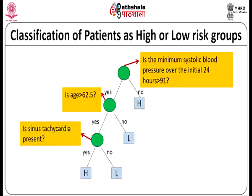Starting with the first variable: is the minimum systolic blood pressure over the initial 24 hours greater than 91? You have only two answers — yes or no. If no, it is high risk. If yes, then is the age greater than 62.5? If yes, you check if sinus tachycardia is present; if yes it is high risk, if no it is low risk. At every point there is only a yes or no answer — a binary partitioning. The dataset of 215 patients is split at each step into two subsets.